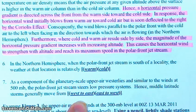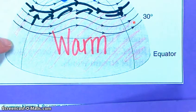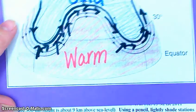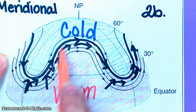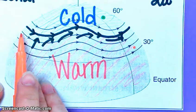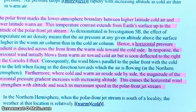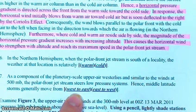As a component of the planetary scale upper air westerlies, and similar to the winds at 500 millibars — that's a pressure reading — the polar front jet stream steers low pressure systems. Middle latitude storms generally move from west to east. Looking at both the zonal and meridional diagrams, the arrows along the jet streams are flowing west to east. With the meridional, it does a lot of wandering, but still goes generally from west to east. The answer to number 7: middle latitude storms generally move from west to east.